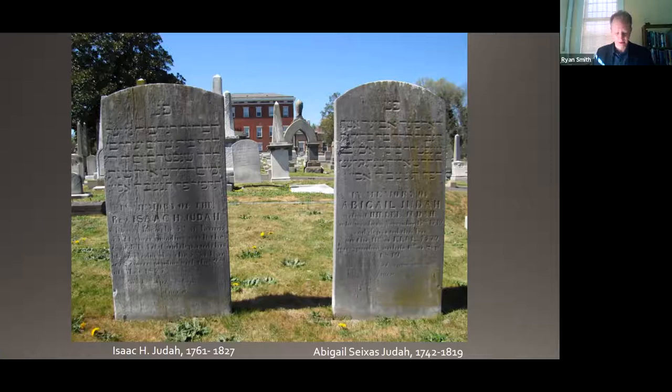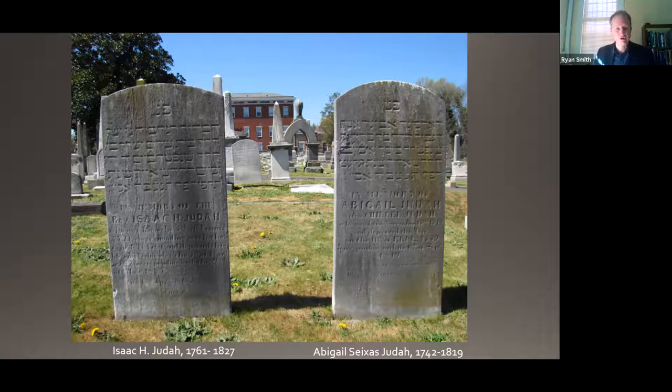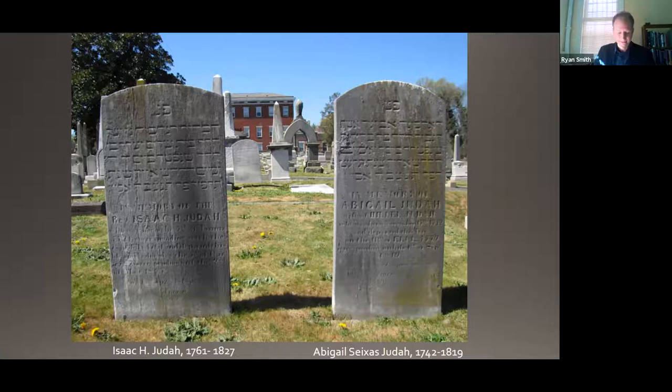Both of these sites I've just shown you are still available for us to visit at the corner of Fifth and Hospital Streets, providing multiple entries into the region's past. They're both listed on the National Register of Historic Places. But for most of their histories, they adjoined an active cemetery at the other corner of Fifth and Hospital Streets on the north side of town — and this is what we're calling today the Chaco Hill African Burying Ground, which I will be talking about for the rest of the time today.